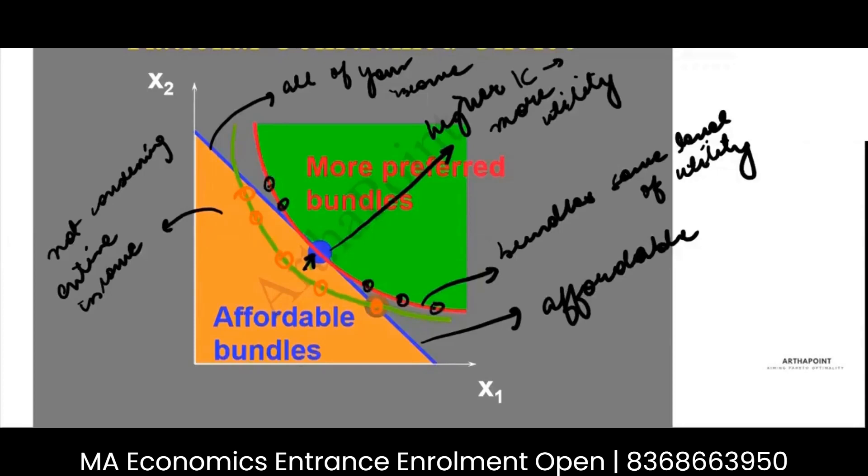But there is this one point. And this is affordable. This touches my budget line. So this bundle that just touches my budget line, one, is affordable because it touches the budget line.